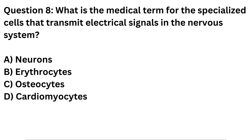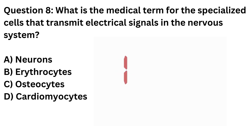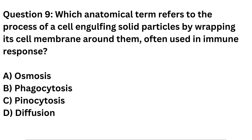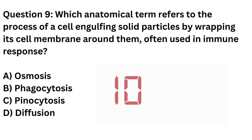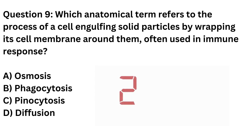Question 8. [Options include] C. Osteocytes. D. Cardiomyocytes. Question 9. [Options include] B. Phagocytes. C. Phagocytes. D. Diffusion. Answer: B. Phagocytes.